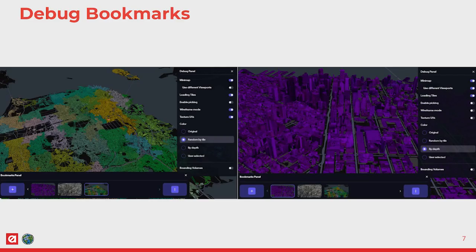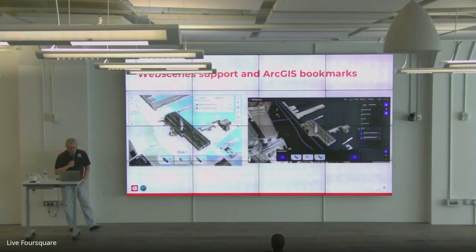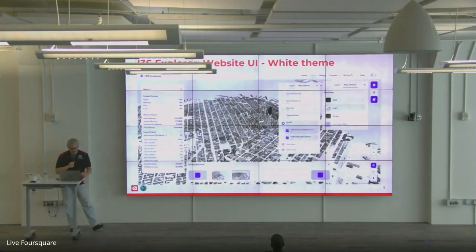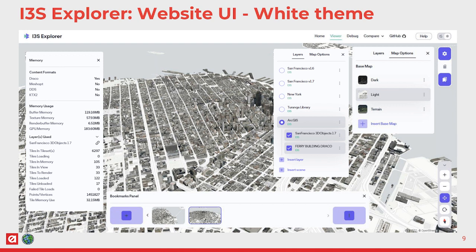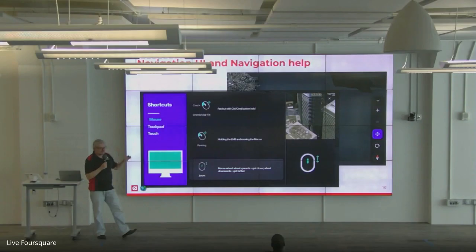We also have debug bookmarks. We just added Vipsyn support and Argus bookmarks for those people who work with Argus tools — this could be a pretty nice addition. We've also got a white theme now, as some users asked for it. It looks pretty clean and nice. We've added some navigation UI help as well. The story of this tool is that it was built for engineers from the beginning, so UI was never a focus — we've done a lot of UI cleanup on this tool.